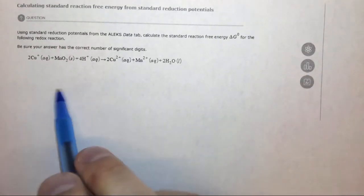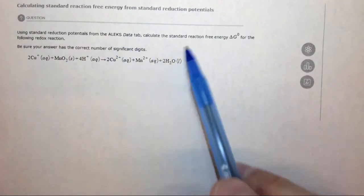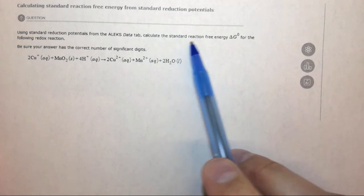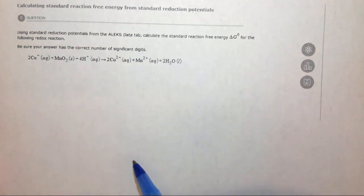In this question it says use the standard reduction potentials to calculate the standard reaction free energy delta G naught for the following redox reaction.